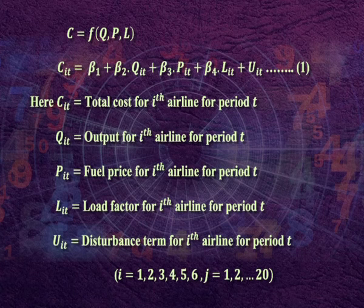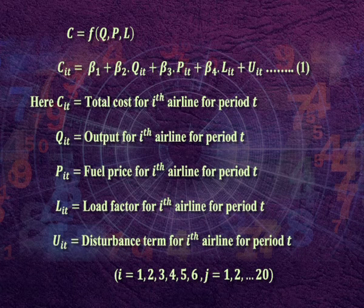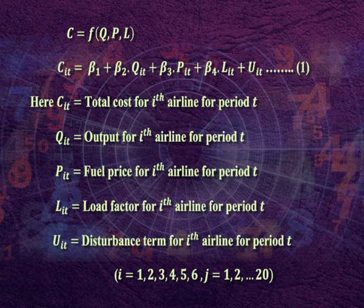We can frame the total cost function as C = f(Q, P, L). Totally we have 120 observations for estimating the total cost function. We can have a linear or non-linear form. We write the linear function as: C_it = β₁ + β₂Q_it + β₃P_it + β₄L_it + U_it. We denote it as equation number 1.